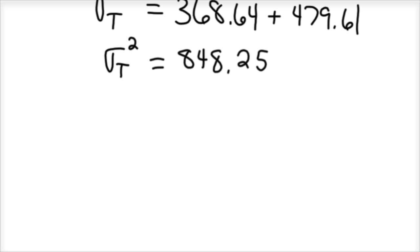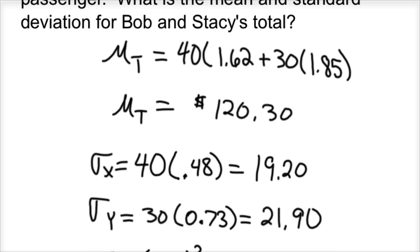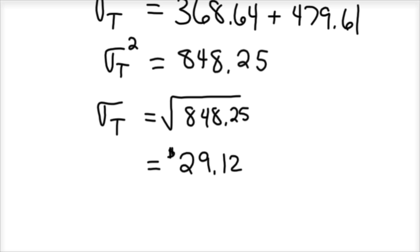We might want to calculate our standard deviation. The standard deviation of our total is the square root of $848.25, which would be $29.12. Together, they're going to make $120.30 per passenger with a standard deviation of $29.12.